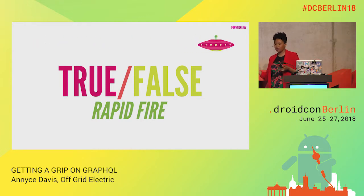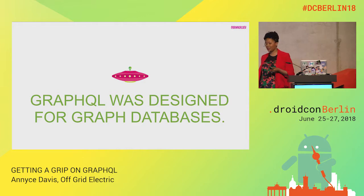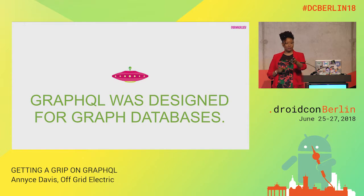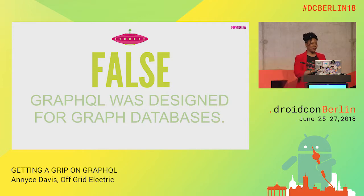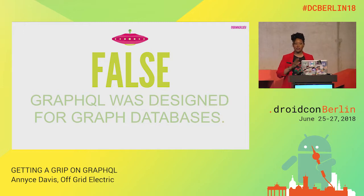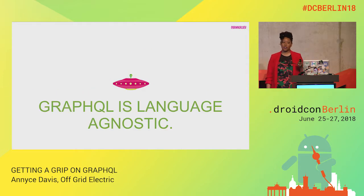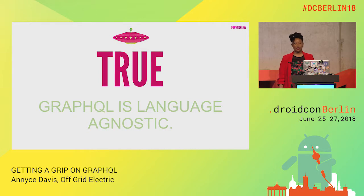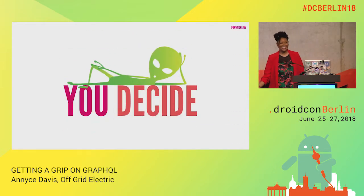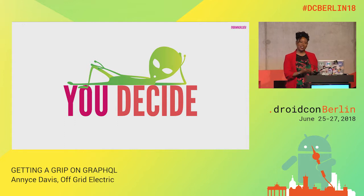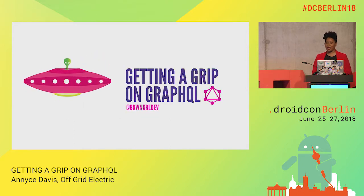Let's do some rapid fire true/false questions. First: GraphQL was designed for graph databases — false. You can use any database you want, or no database at all; it's just an abstraction layer. Next: GraphQL is language agnostic — true. You can use any language, from C# to Elixir to Kotlin and more. Finally: REST is dead. Personally, I don't feel that REST is dead, but I really do enjoy working with GraphQL in my day-to-day work — it does allow us to iterate pretty quickly. Thanks for coming, and I hope you feel like you've got a better grip on GraphQL.